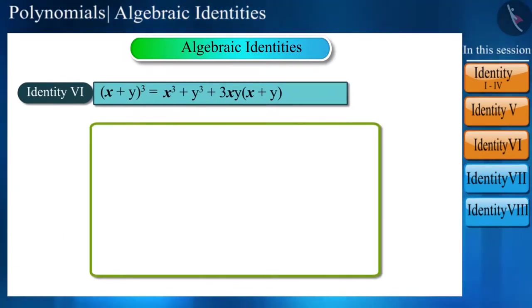The next identity is based on this only. We have to find the extended form of x minus y to the power of 3. We can derive this by substituting y with minus y in identity 6.